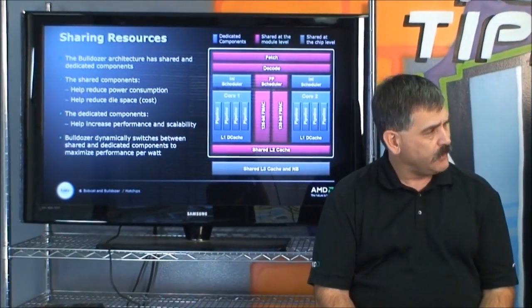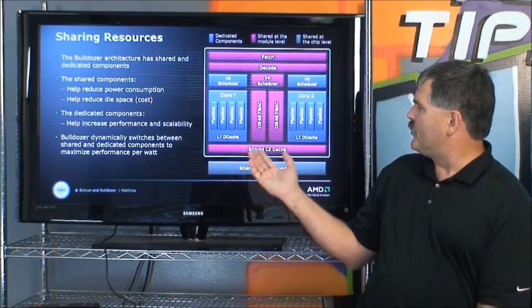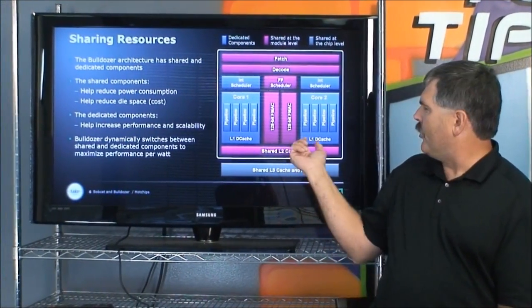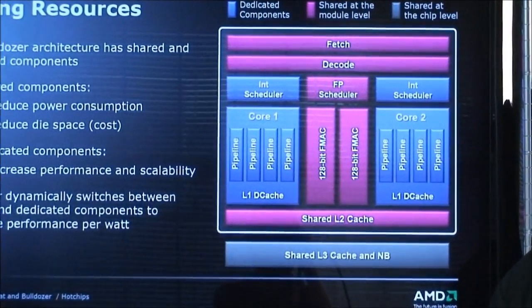The first topic we're going to touch on today is the Bulldozer module. What this is, is it is a building block of many of AMD's upcoming processors. The Bulldozer architecture is a new architecture — it's our first change since the Opteron was introduced in 2003. We've redesigned the core itself into a module architecture that consists of two cores, core one and core two, and shared resources amongst the cores.